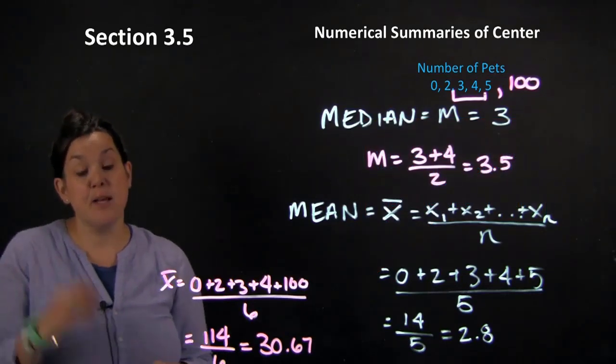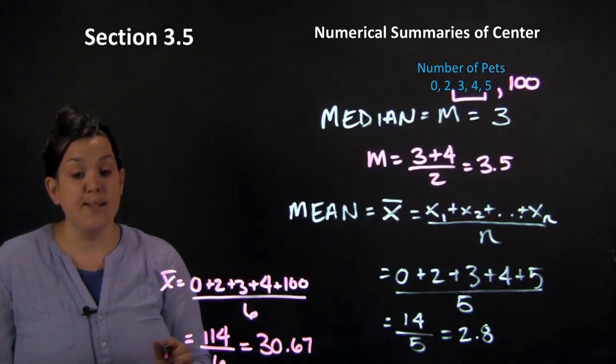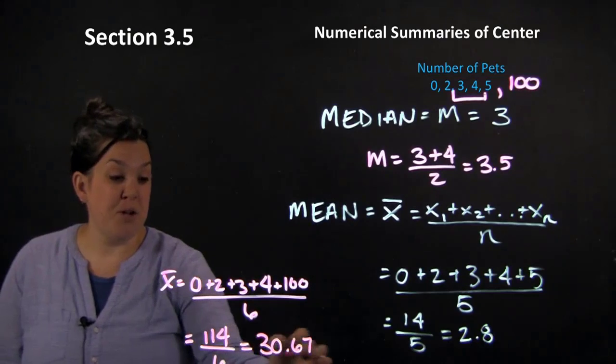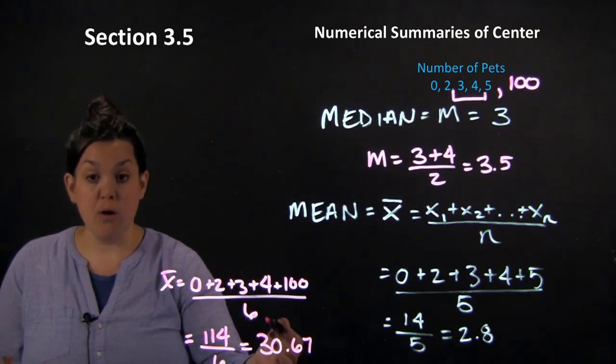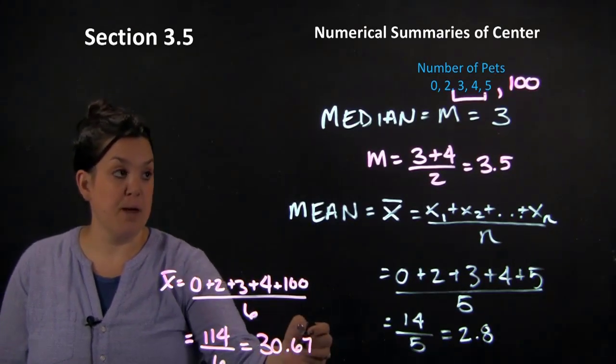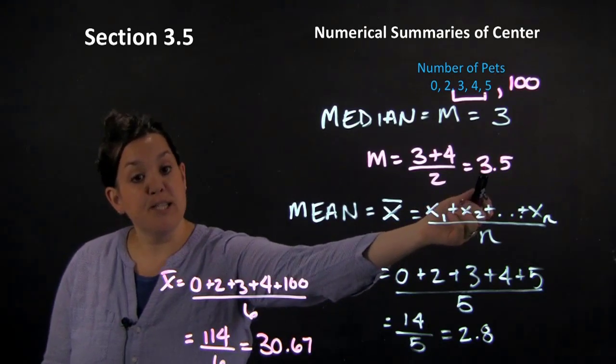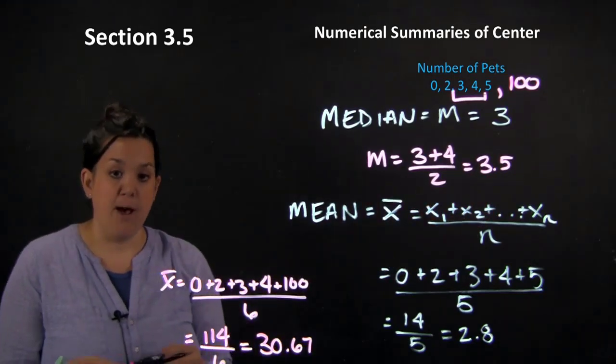So you can see the significant impact that that outlier has on the mean. Here I have a mean of 30.6. It's very largely impacted by that outlier, whereas the median is not. I only moved a little bit with 3.5.